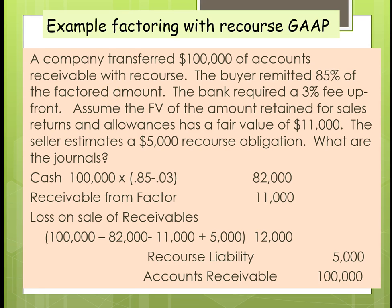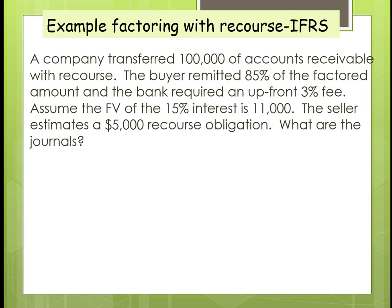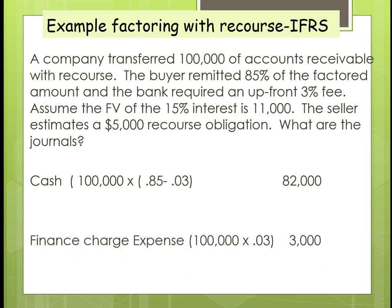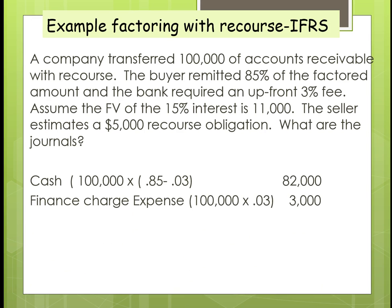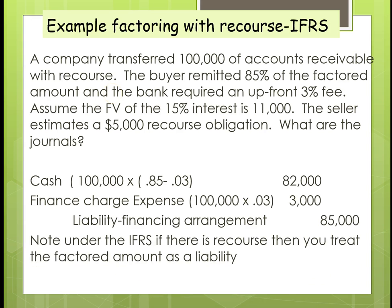Now let's look at the last example — what if we did it on the international standard with recourse? We would book the cash minus the 15% and the 3% fee. We would book the finance charge of $3,000 and book a liability for the financing arrangement. Note that we do not take the accounts receivable off the books.